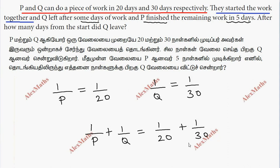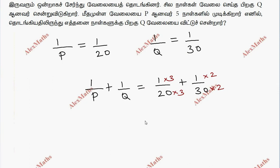We take the LCM to simplify: LCM of 20 and 30 is 60. So 3 plus 2 equals 5 by 60, which cancels to 1 by 12. So P and Q working together, but after some days Q left.